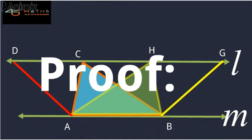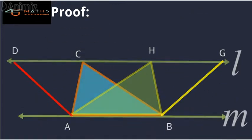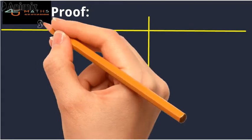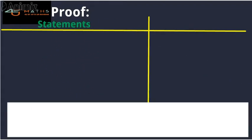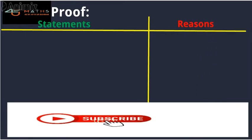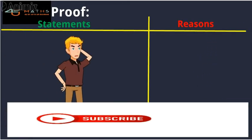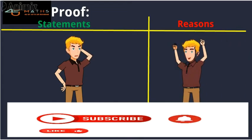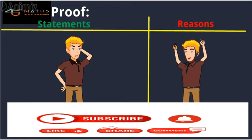Proof. The proof has two main portions: Statements and Reasons. In Statements we provide assertions, and in the Reasons we provide solid grounds for those assertions.